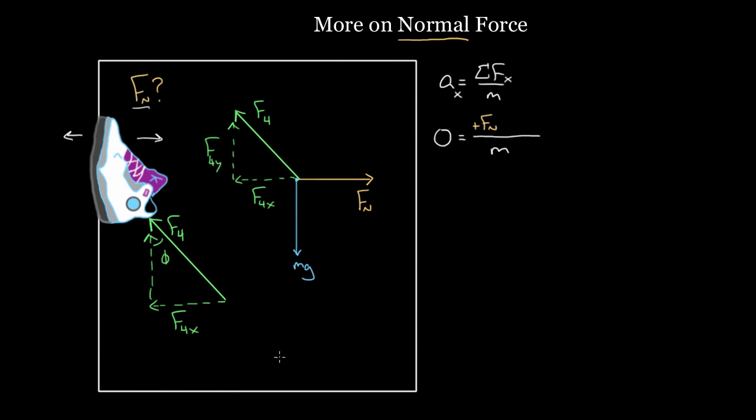So to solve for F4x, I'm just gonna again use sine because this angle, the opposite of this angle is F4x. So I'm gonna use sine of theta, oh sorry, sine of phi. I'm gonna take sine of phi. That's gonna equal F4 in the x divided by the total amount, F4. I get F4 in the x is gonna be F4 times sine of phi.